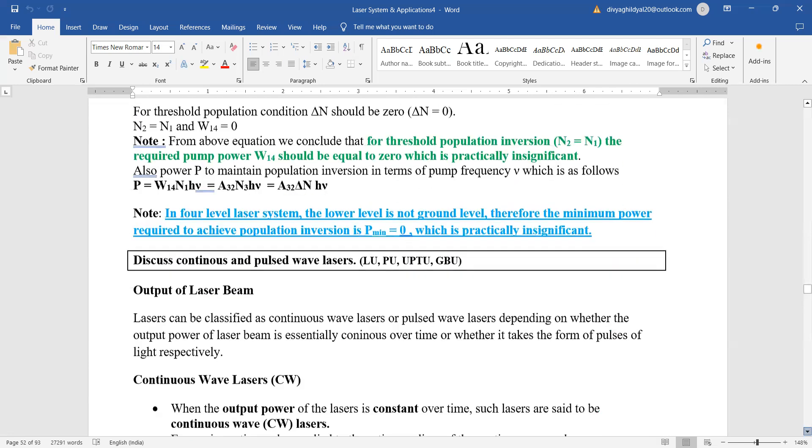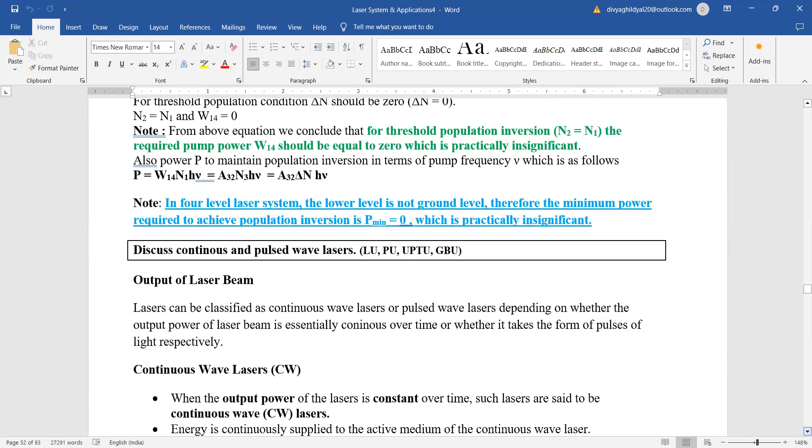Hence, power to maintain population inversion in terms of pump frequency is as follows. In four-level laser system, the lower level is not ground level; therefore, the minimum power required to achieve population inversion is practically insignificant.